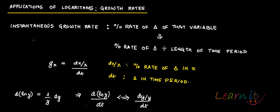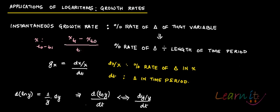So in case of any variable X, how do you find out the growth rate of X? Generally, if you want to find out growth rates of X between time T0 and T1, what you do is find out the value of X at time T1 minus the value of X at time T0, divided by the elapsed time, that is T1 minus T0. This is the way you find out the growth rate.